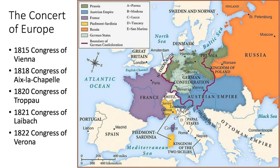The Concert of Europe's primary objectives were to contain France after decades of war, achieve a balance of power between Europe's great powers, uphold the territorial arrangements made at the Congress of Vienna, and prevent the rise of another Napoleonic figure that would result in another continent-wide war. Historians have generally agreed they were successful, as there was no major war pitting the great powers against each other until the Crimean War 40 years later. France was successfully reintegrated back into Europe, joining the alliance in 1818 at the Congress of Aix-la-Chapelle. However, after this success, the Concert of Europe gradually fell apart, mainly because of disagreements between the great powers, particularly between Britain and the countries with more conservative constitutions who were also members of the Holy Alliance.